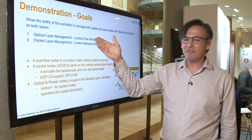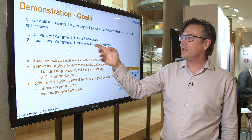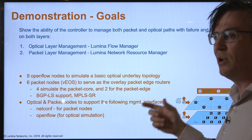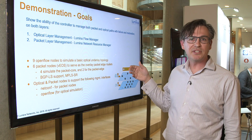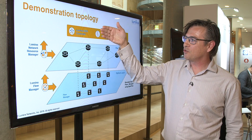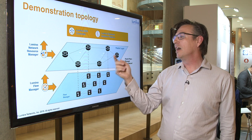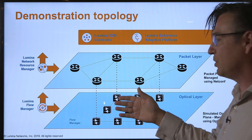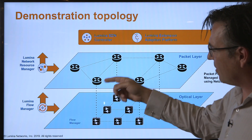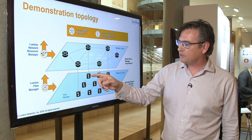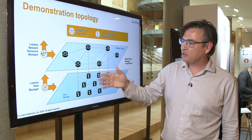This is the demonstration we're showing today. We have optical layer management with LUMINA Flow Manager, packet layer management with LUMINA Network Resource Manager, and an OpenFlow network which sits underneath an IP packet network. We have two domains run by a single path computation engine called LUMINA Network Resource Manager. The packet nodes are Arista routers programmed with BGP labeled Unicast and BGP link state for topology. Underneath, we have a simulated optical network using LUMINA Flow Manager, connected via interfaces into the optical network.